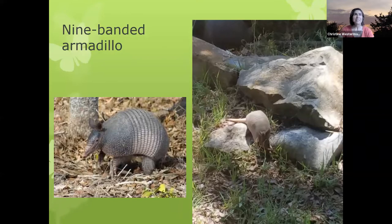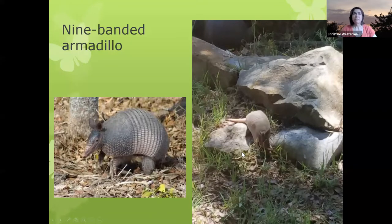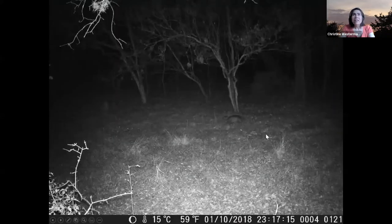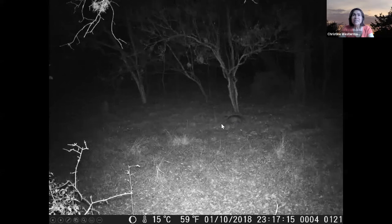One animal I always like to talk about is the armadillo — the official common name is nine-banded armadillo. This is a photo of an adult armadillo and this is a photo of a baby, which you can see is a lighter color and smoother. One fun fact about armadillos is that when they reproduce, they always have four identical quadruplets. So if you're lucky enough to see a young armadillo family, you might see four babies all at once.